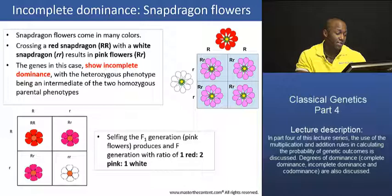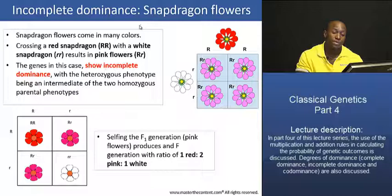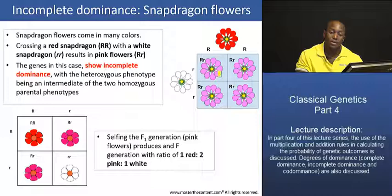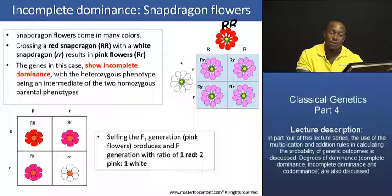What we have on the slide right here is an example of incomplete dominance, involving the Snapdragon plant. When we cross a red Snapdragon plant with a white Snapdragon plant, all the F1 hybrids — all the offspring of that cross — will have pink flowers. This is a cross between the dominant red homozygous genotype and the recessive white genotype, resulting in the formation of heterozygotes: an F1 generation that is all pink.